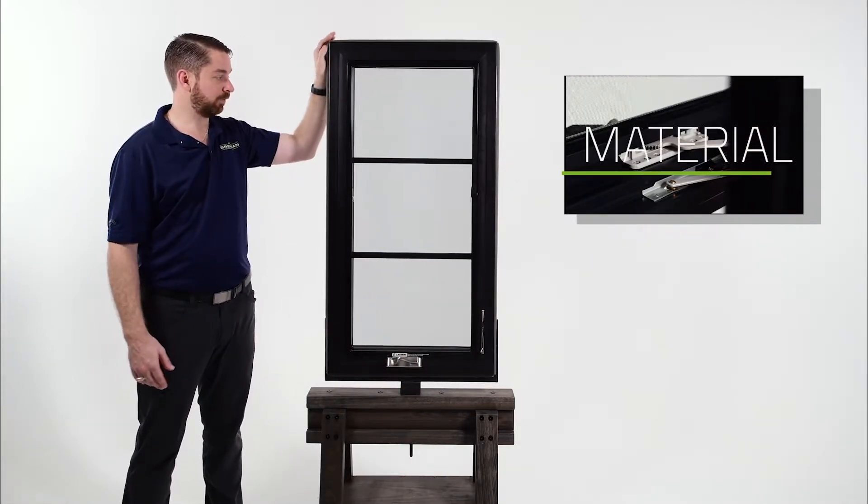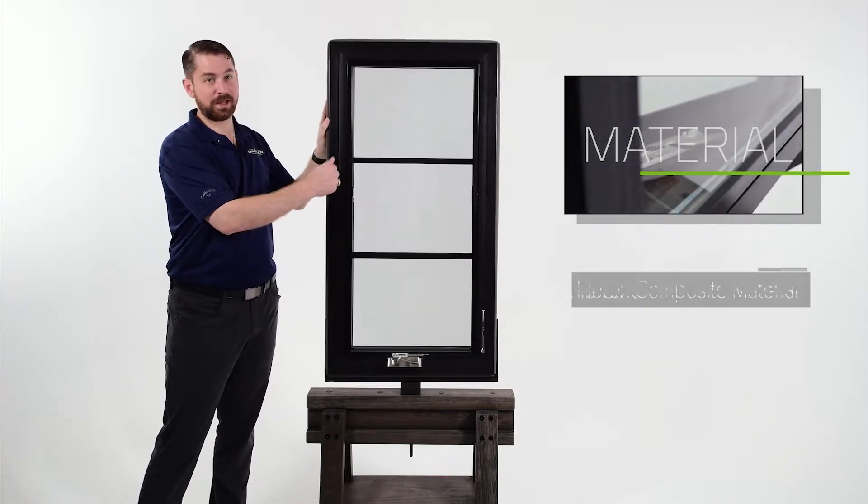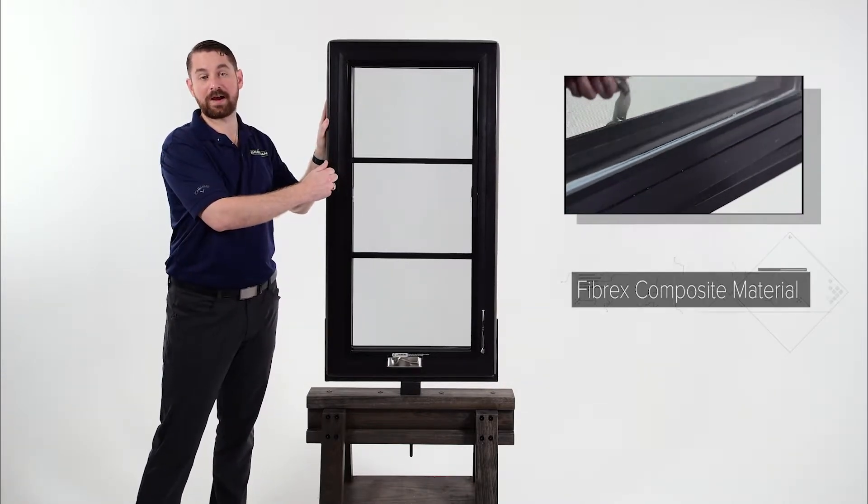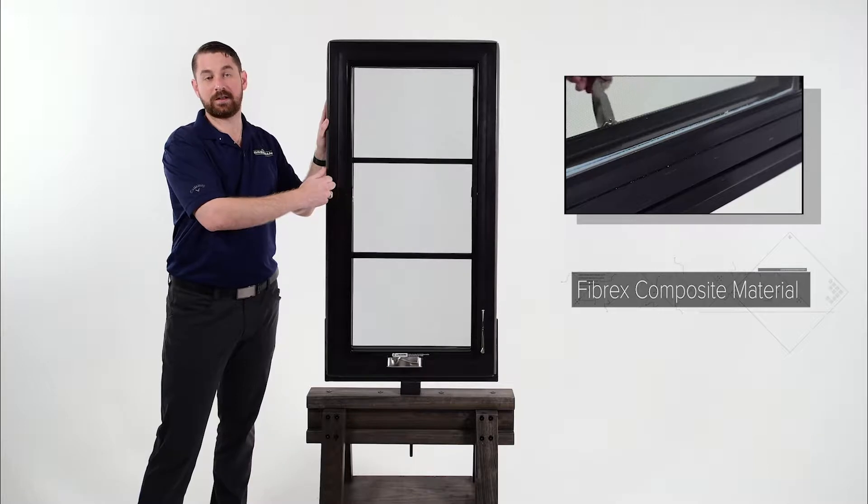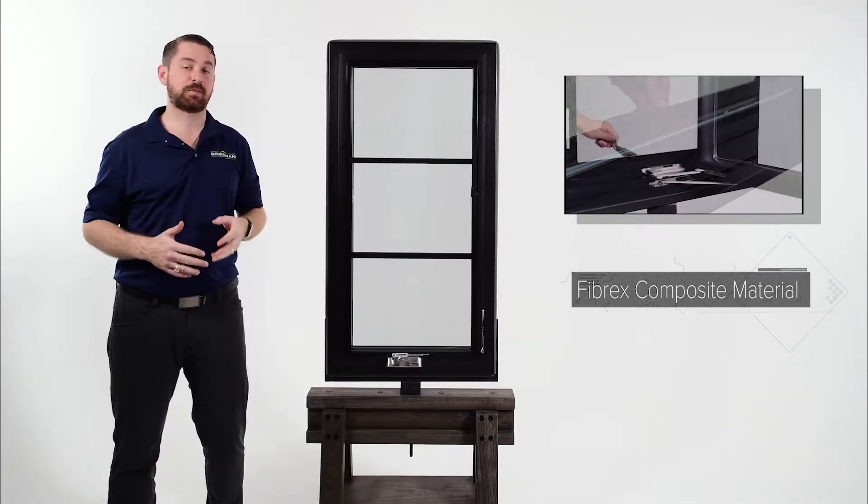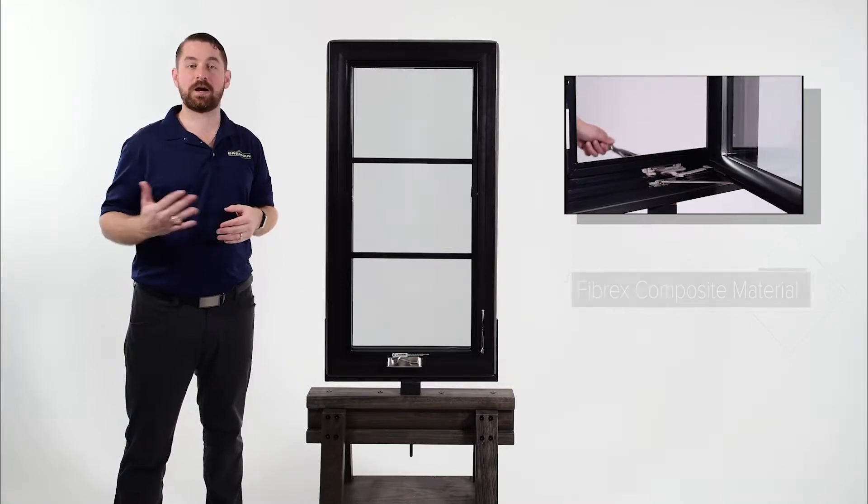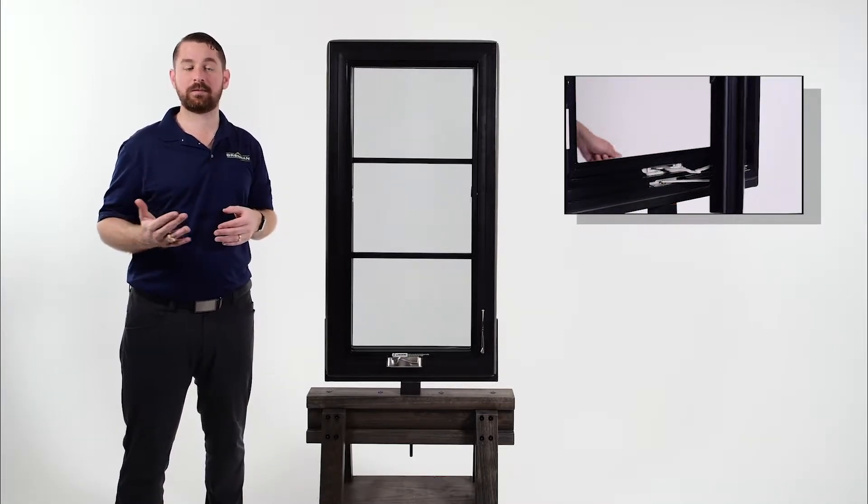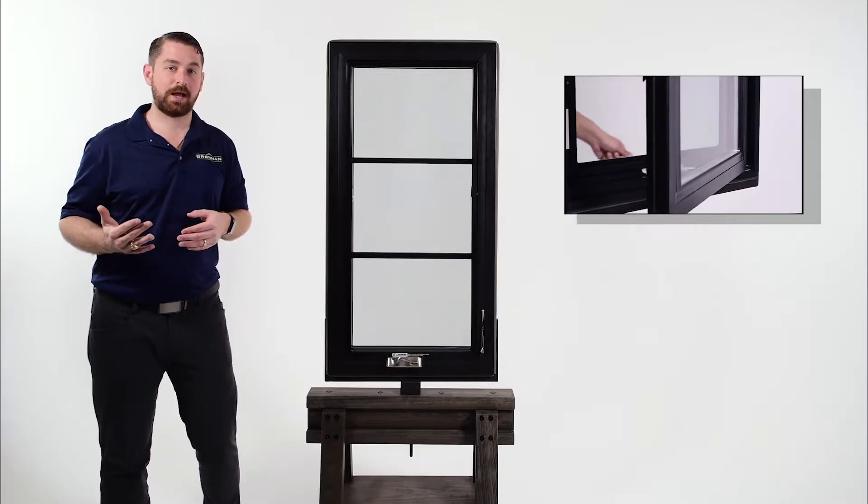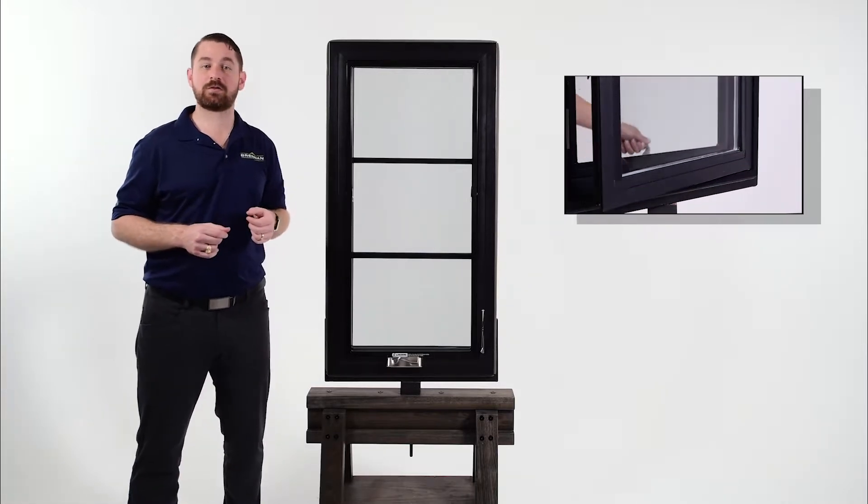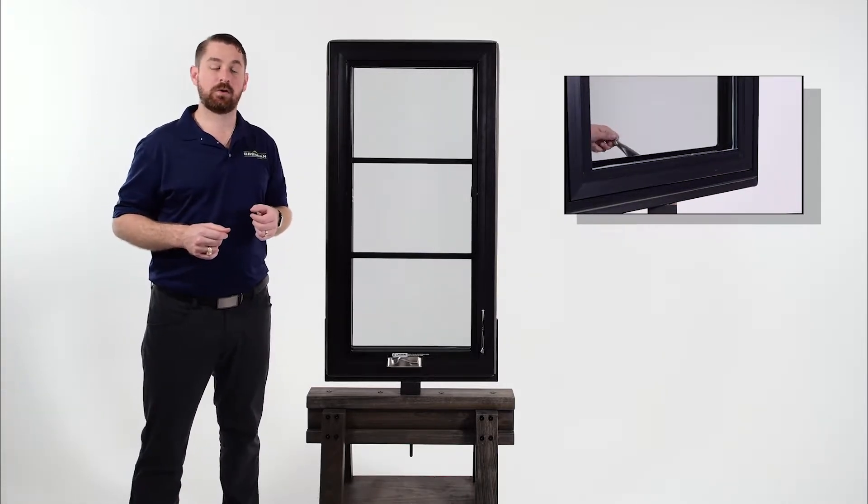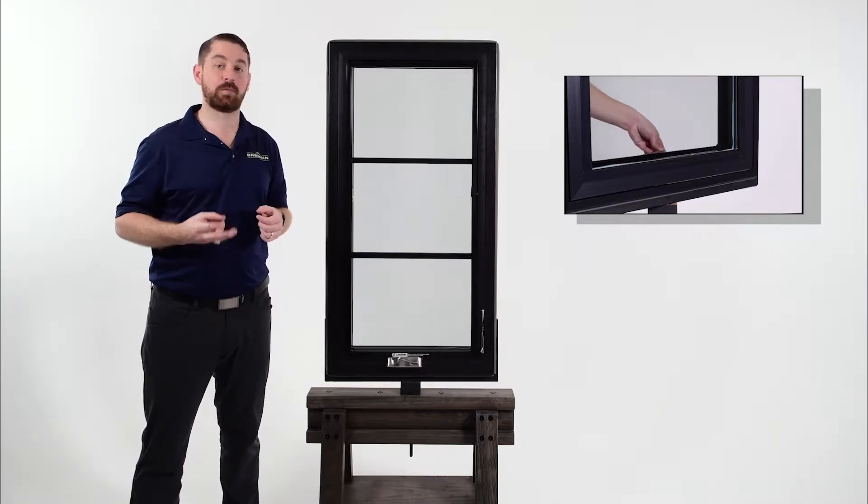As for the material, the window is made out of a Fibrex material. It's a material that Anderson developed. It's a proprietary material made of a composite mixture of reclaimed wood fiber and PVC polymer. Anderson claims it's twice as strong as vinyl and it won't flake, blister, or peel.